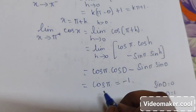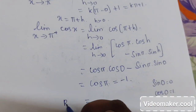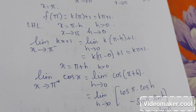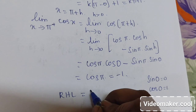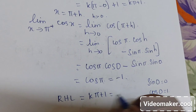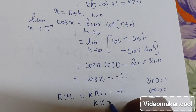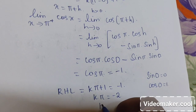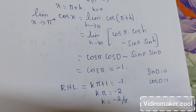This right hand limit equals the functional value k·pi plus 1. So we equate: k·pi plus 1 equals minus 1. Therefore k·pi equals minus 2, and k is equal to minus 2 by pi.